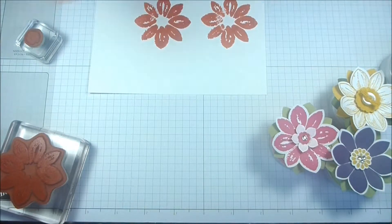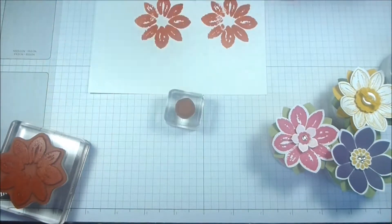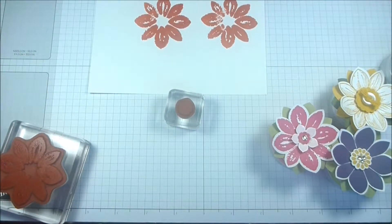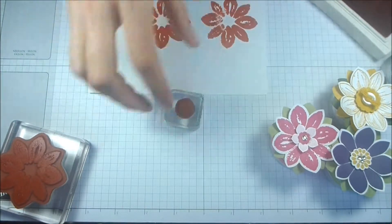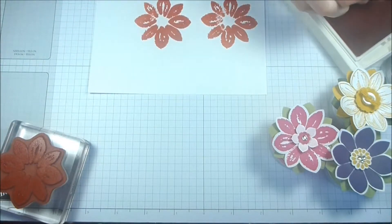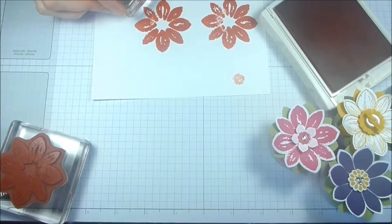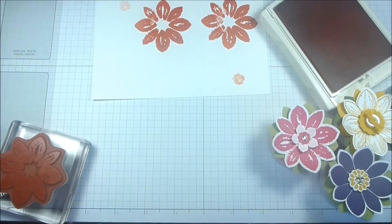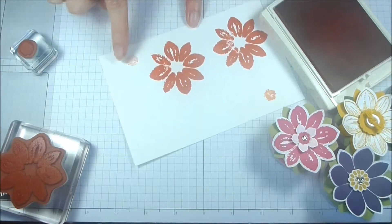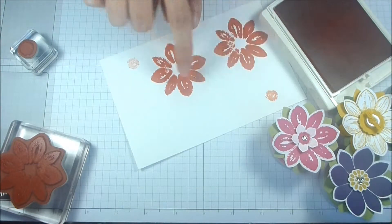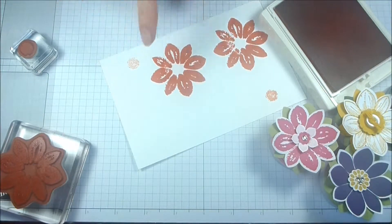So for the next one, for the little center of the flower, we're going to use Crisp Cantaloupe, but we're going to stamp off. So stamp off. See how it's much lighter? This is the way I want it because you can still see the difference, but I wanted it a lot lighter.